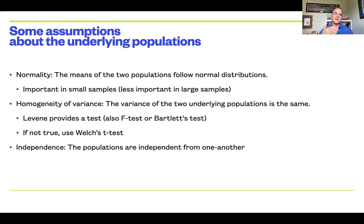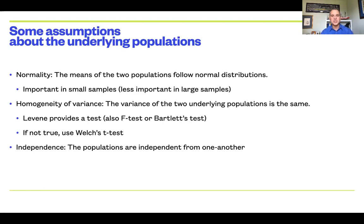So the two assumptions are: normality — specifically normality of the distribution of sample means — and homogeneity of variance. The final assumption is independence: the two samples are not related to each other in any way except that they came from people who participated in the research. They should be independent of one another. When they're not, there are ways to deal with that — repeated measures, dependent samples t-tests, etc. But the underlying assumption of the independent samples t-test is that the two samples are independent of one another.